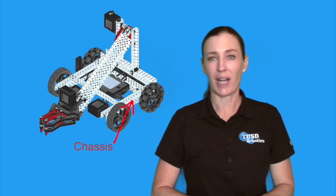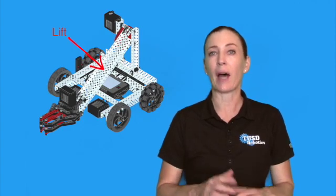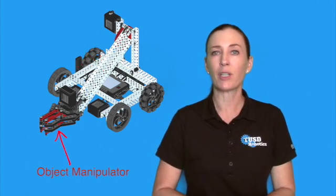Every robot can be divided into three subsystems. The chassis, which is the bottom, the lift or the intake, which is generally the main body of the robot, and then the object manipulator.